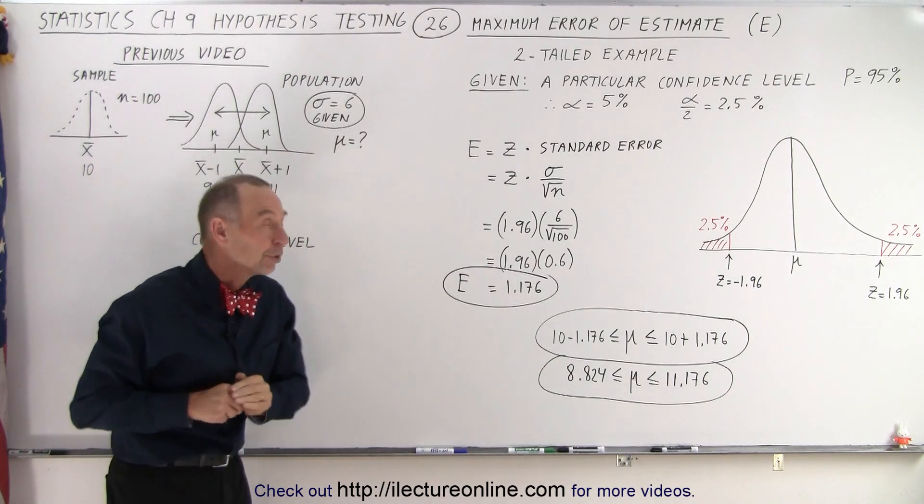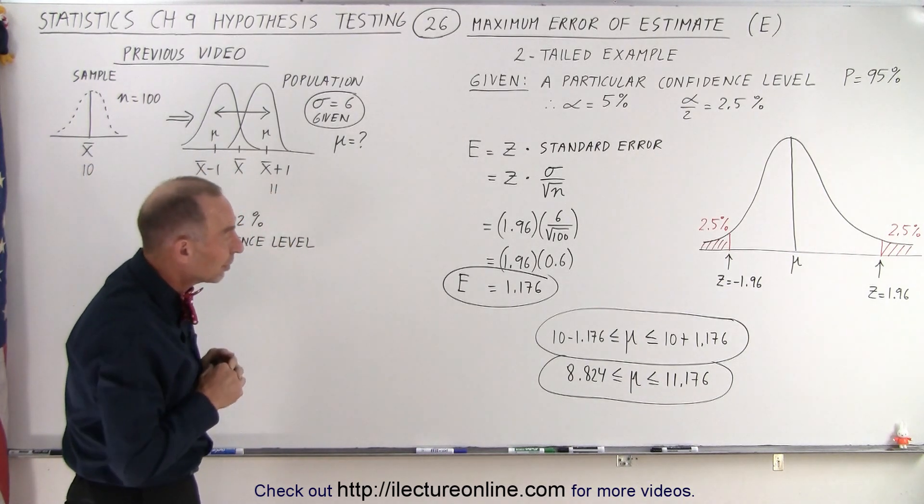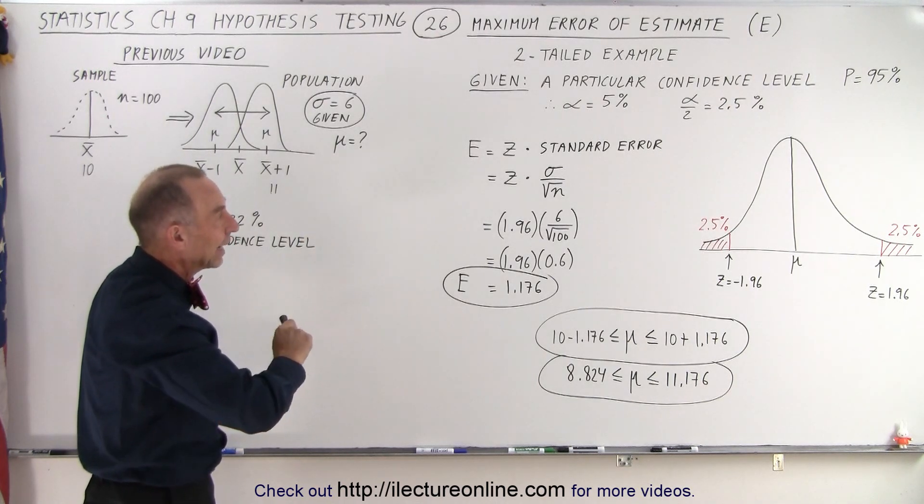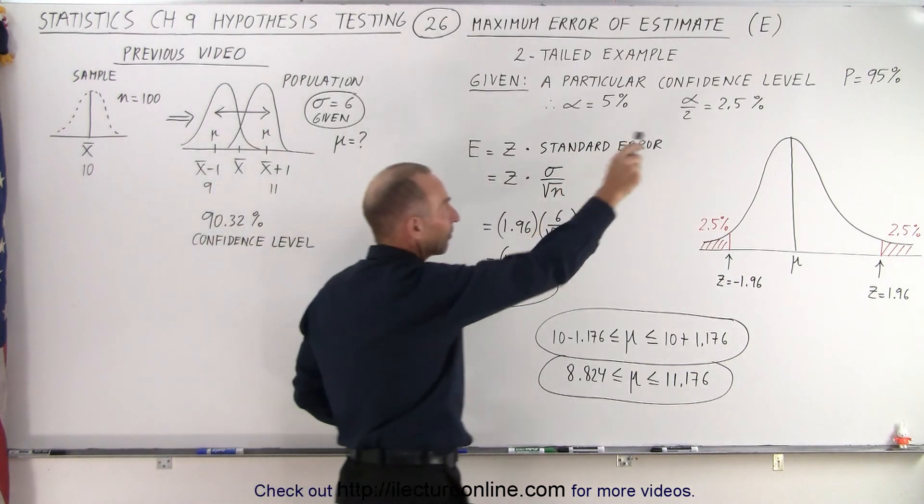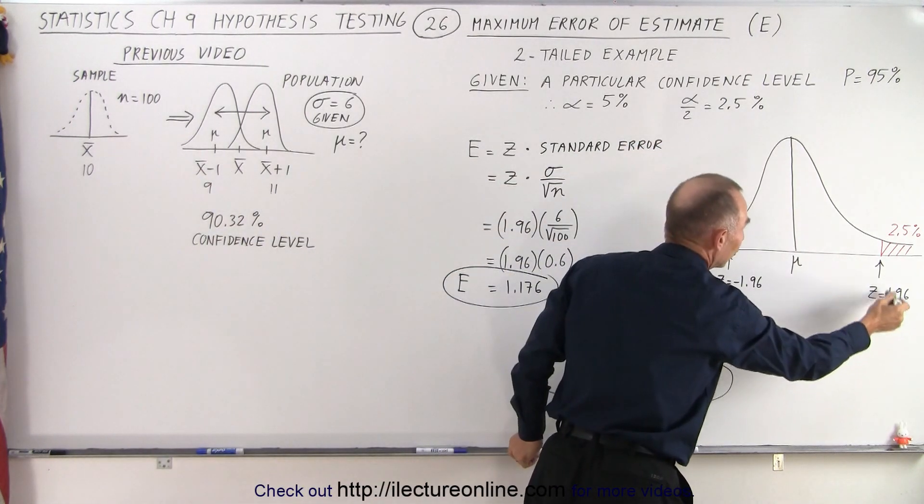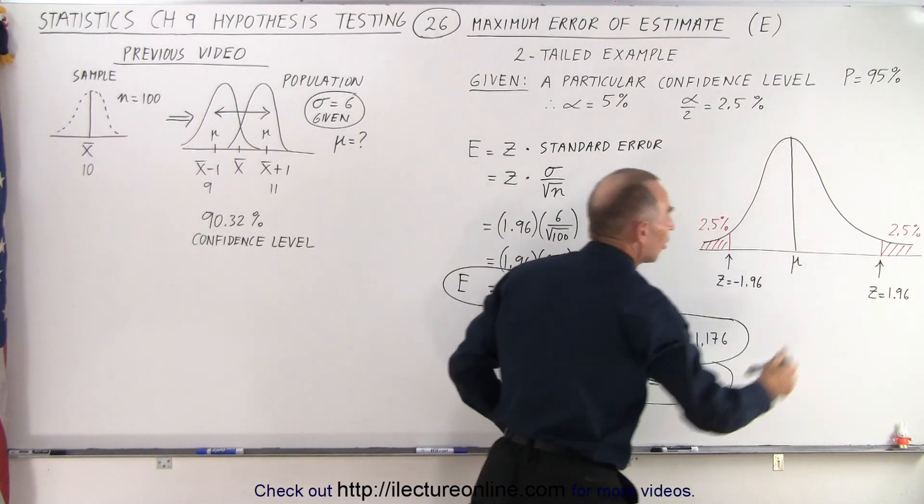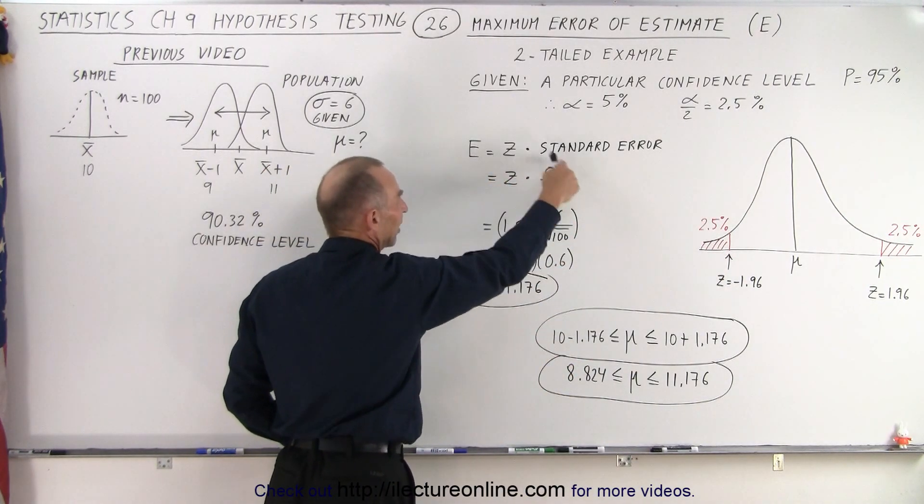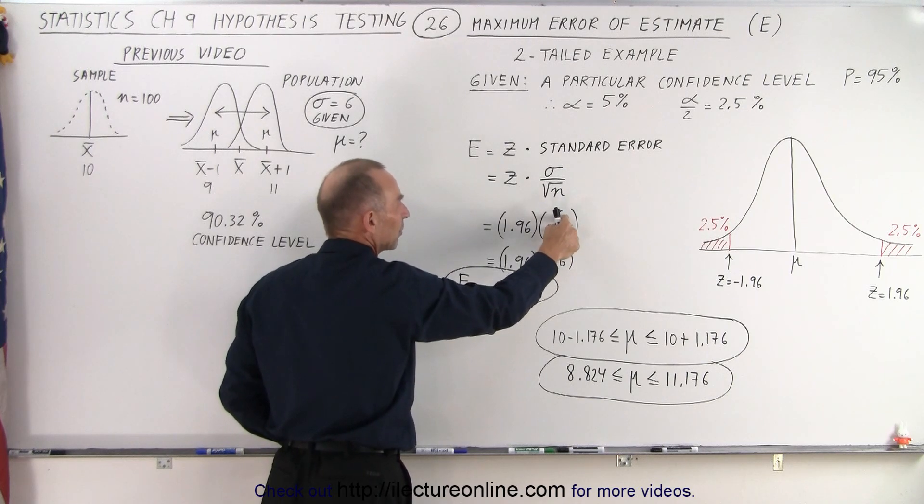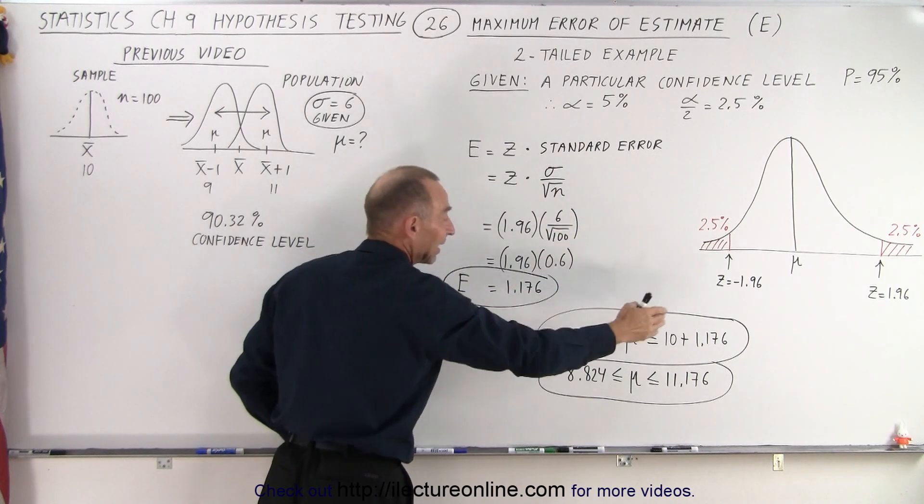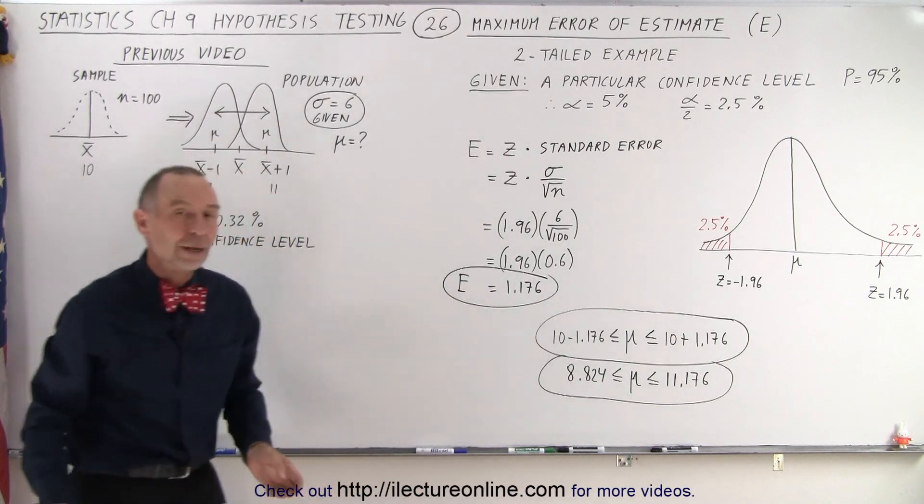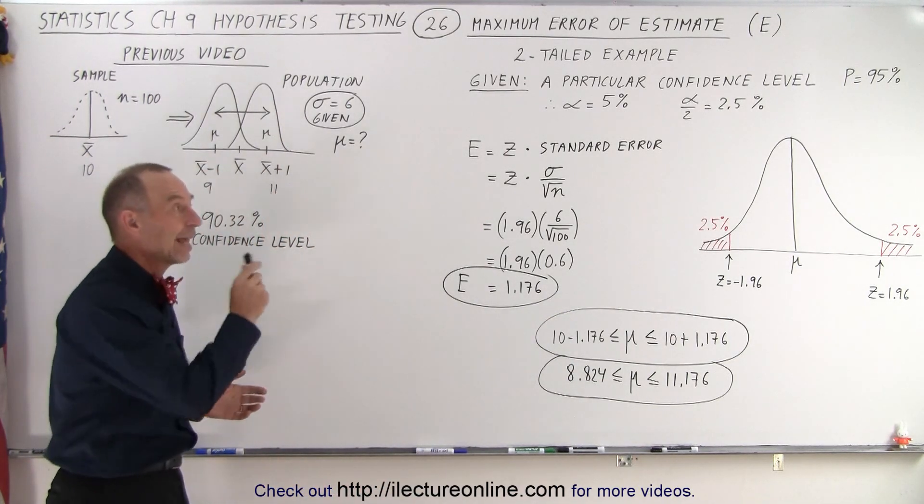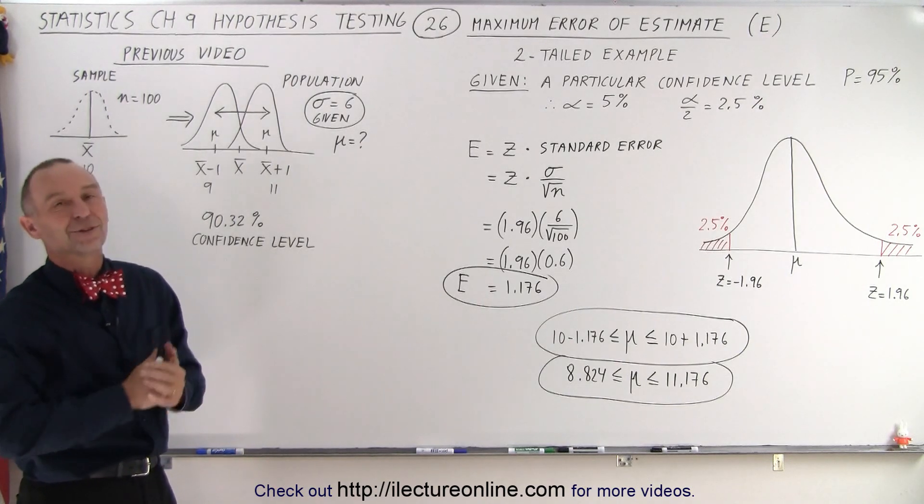And that's how we interpret the maximum error of estimate based upon the confidence level that's chosen. We find the z-score of the edges of the critical regions, then multiply times the standard error, which is the standard deviation of the population divided by the square root of the sample size. That gives us the range of values that we can expect the mean of the population to be with 95% certainty.